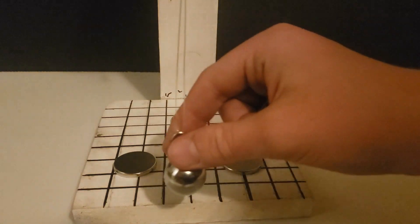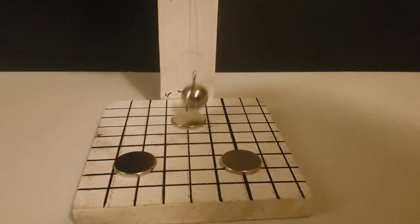However, when the bob is released, it follows a seemingly random path around the magnets, almost seeming to orbit them, becoming entangled with them in no discernible fashion, until suddenly it comes to a halt above just one of the magnets.